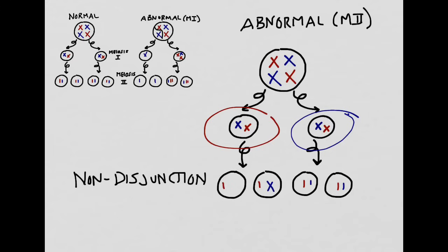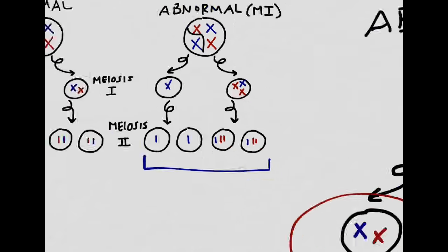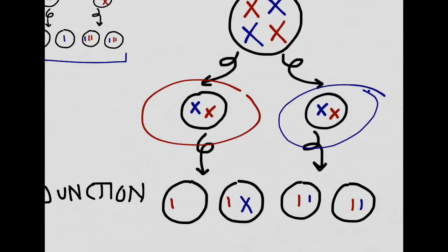When we look at meiosis I non-disjunction, every single daughter cell down here has an incorrect number of chromosomes. However, if the first round goes correctly, only half of them have the wrong number of chromosomes, and so the resulting child would have at least a 50% chance of having no chromosomal problems whatsoever, but a 50% chance of having something like Down syndrome.